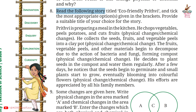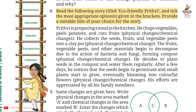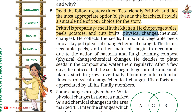Question 8: Read the following story titled 'Eco-Friendly Prithvi' and take the most appropriate options given in brackets. Provide a suitable title of your choice for the story. The title of the story is 'Prithvi's Green Kitchen.' Prithvi is preparing a meal in the kitchen — he chops vegetables, peels potatoes and cuts fruits. This is a physical change. He collects the seeds, fruits and vegetable peels into a clay pot — also a physical change.